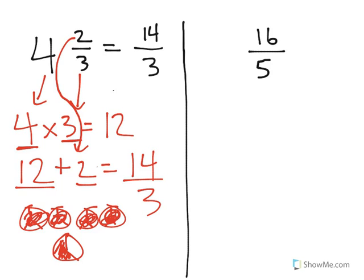Now over on the right, what we're going to do is we're going to convert 16 fifths into a mixed number. And the way we're going to do that is we're first going to represent 16 fifths visually.